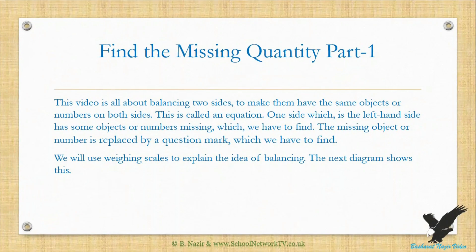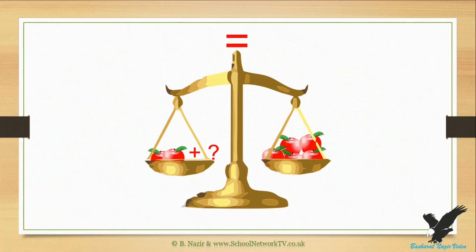This video is all about balancing two sides of numbers — this is called equations. One side, which is the left-hand side, has one number missing which we have to find. The missing number is replaced by a question mark. We will use weighing scales to understand the idea of balancing. You can see two plates of a scale — the scale is balanced or level, but the left side has two apples and the right has five apples. This means we need to add three more apples to the left side to make it balance.